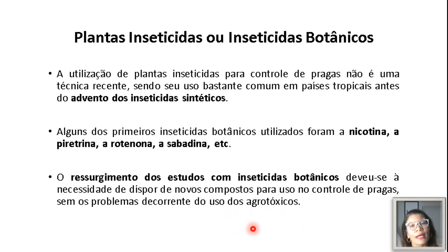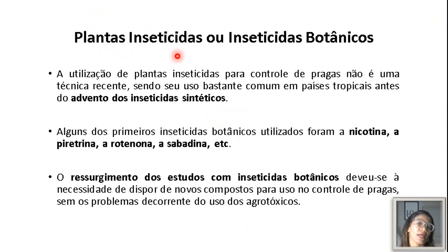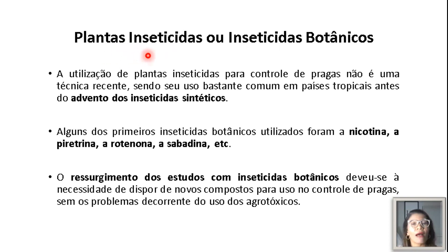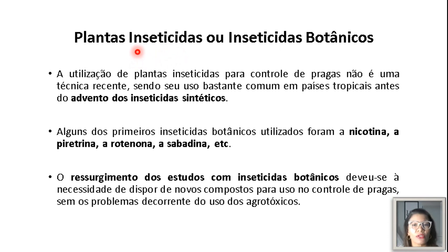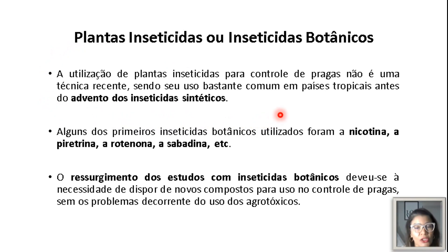Agora vamos falar sobre as plantas inseticidas, também conhecidas como inseticidas botânicos. Esse termo é considerado por alguns não tão adequado, porque o ideal é que essas plantas não matem de imediato o inseto — não provoquem aquele efeito lockdown de aplicou-matou. A utilização de plantas inseticidas para o controle de pragas não é uma técnica recente, sendo seu uso já bastante comum nos países tropicais antes do advento dos agrotóxicos.